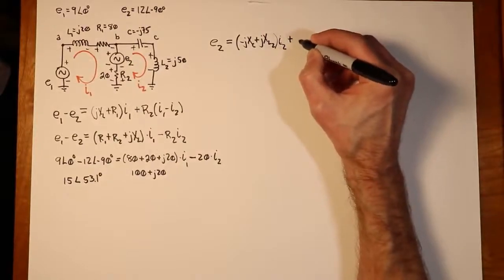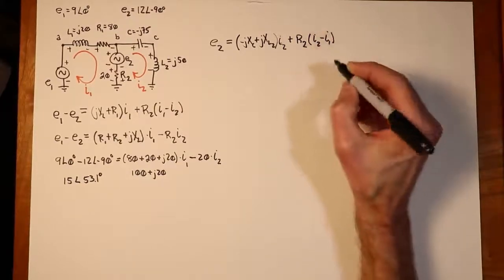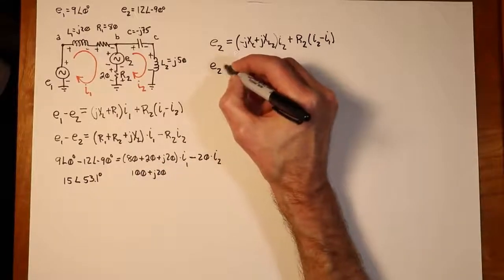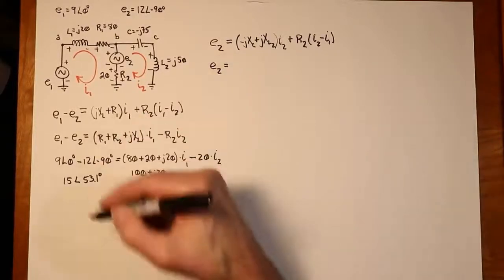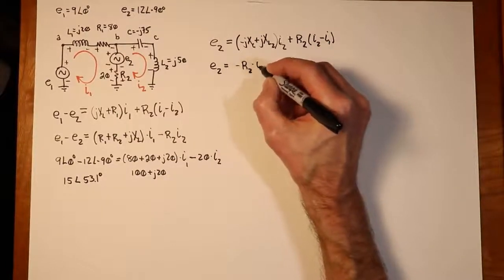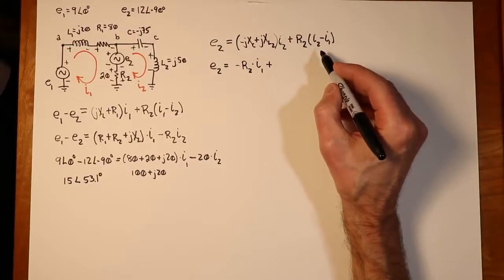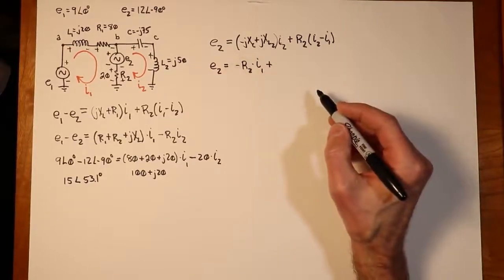So we just say that's plus the drop on R2, which is Ohm's law R2 times the current, which is I2 minus I1. I'll do the same thing. We'll expand this out, collect up some terms. So our I1 term, we'll put those first. The I1 term, that's going to be a negative R2. And then for our I2 term, we have the R2, we have the X of L number 2, and the minus J X of C. So we can put those all together.